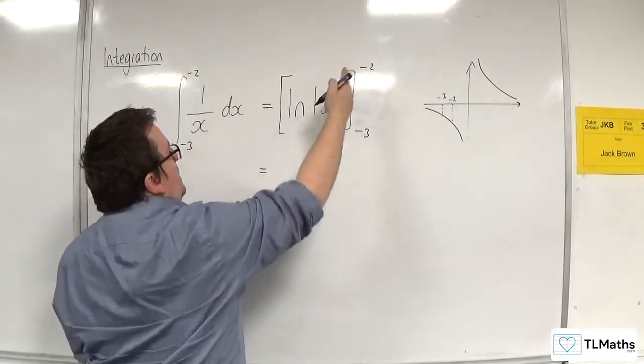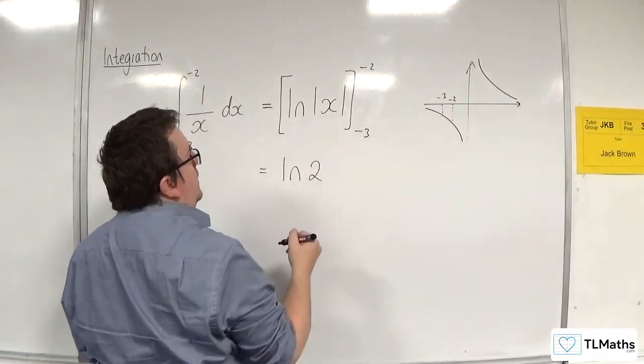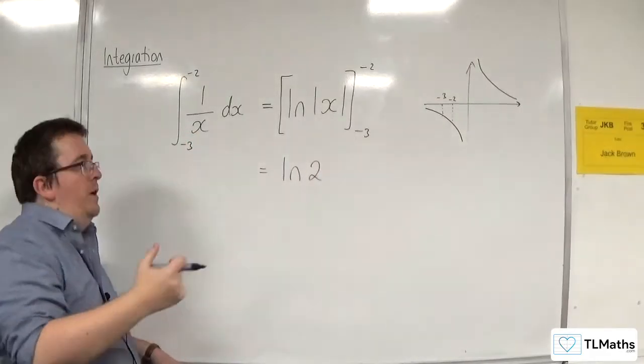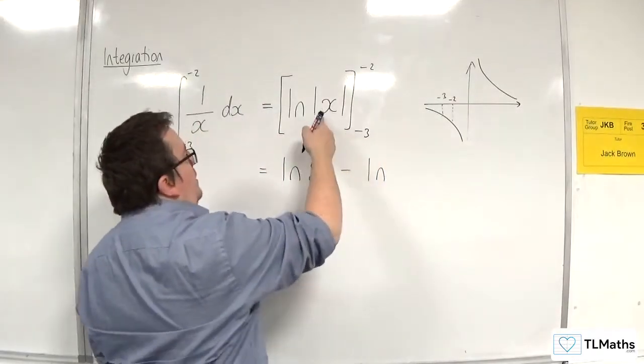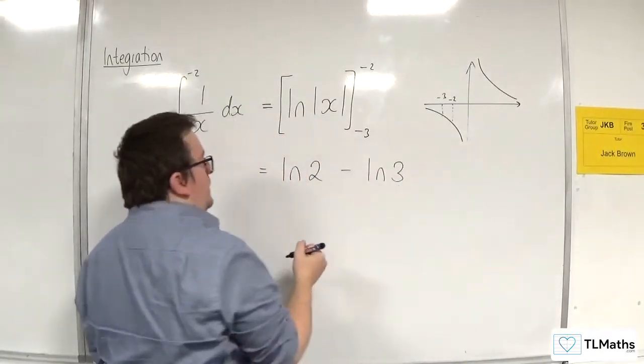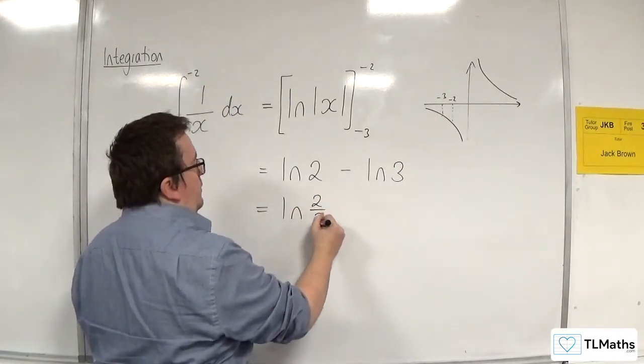When we substitute in the minus 2, we're going to get the natural log of just 2. Because the modulus sign knocks out the minus. Then take away the natural log of substituting in the minus 3. So we get log 3. And then we can use the log law to bring those two together. That's log of 2 thirds.